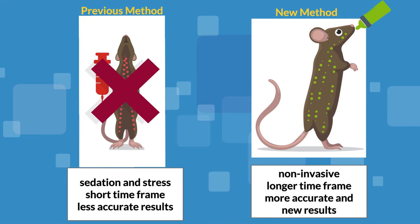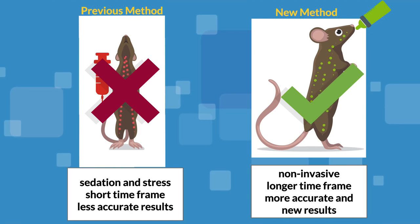This results in less stress for the animal, which leads to more accurate experimental outcomes. This method also allows for a longer timeframe of experimentation, letting researchers follow the metabolism of the labeled molecules through long metabolic pathways.